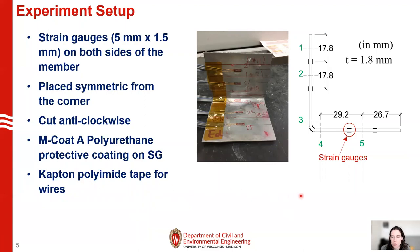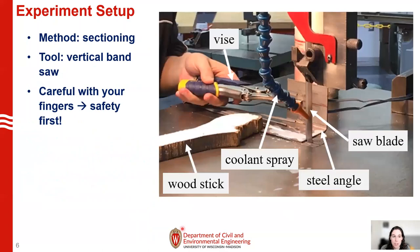What we want is to measure the residual stresses at outer and inner surfaces and use this to calculate membrane and flexural residual stresses. We used the sectioning method. You can see the specimen here — we used a vertical band saw to cut into sections. Note, you must be very careful with your fingers not to get them cut. You can see this is our steel angle, this is our blade cutting it, we have coolant spray if it gets too hot, and a wood stick and vise to hold it in place for cutting.